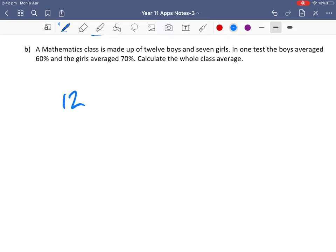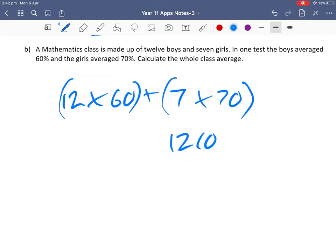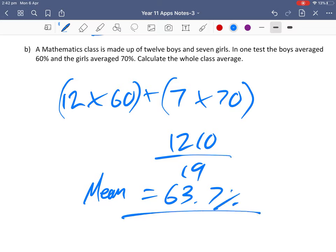So the boys all get 60 and the girls get 70. What I'm going to do is calculate the sum of the scores, which is 1210, and divide that by the number of scores. So in the end I will have a mean of 63.7%. Easy as that.